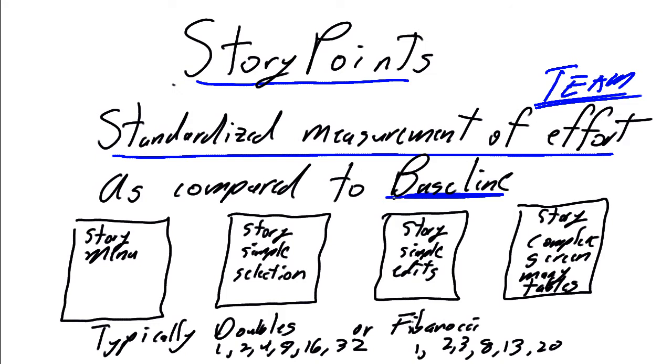Let's see how it works. We establish a baseline for our project. Typically we establish a baseline as the most simple story we can imagine that the team is ever going to take on. So I'm suggesting the most simple story we're going to have in our project is a menu. We establish the baseline, and typically we say the baseline is one story point.